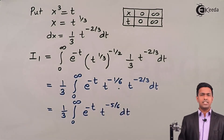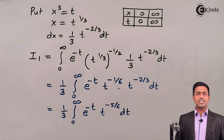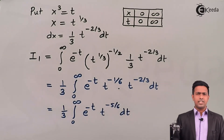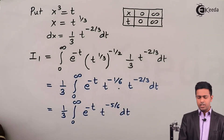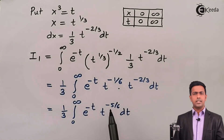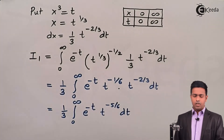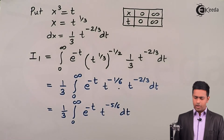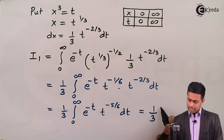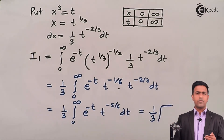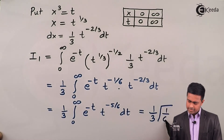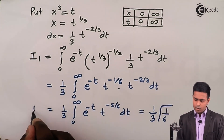This now exactly matches the definition of the gamma function. The power of t is −5/6, so we add 1 to get the argument of gamma: −5/6 + 1 = 1/6. Therefore, I₁ = (1/3) · Γ(1/6).